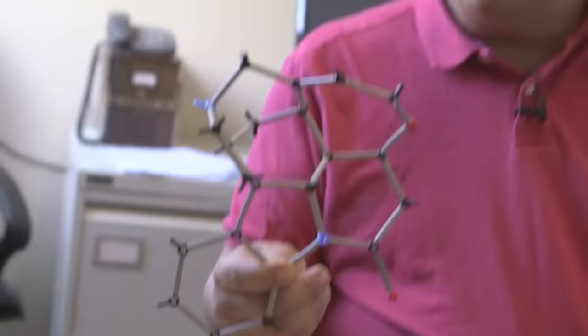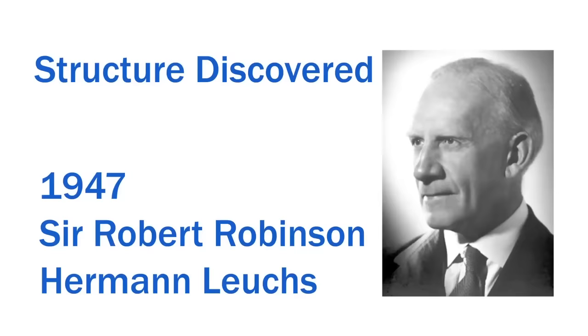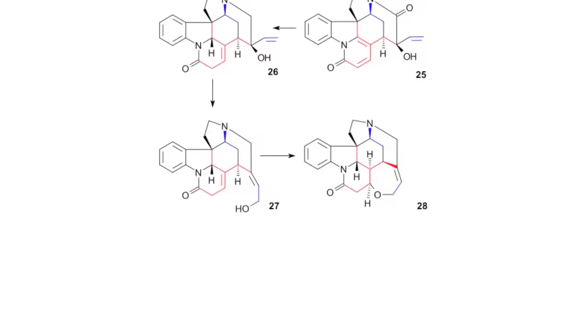And Leuchs, a completely separate chemist, also did. But Robinson was very famous in his day. And this was a culmination of two decades worth of work in his laboratories. Seven years later, Robert Burns Woodward was the first group to synthesize it. And Robinson had said, for its molecular size, it's the most complex molecule ever known.